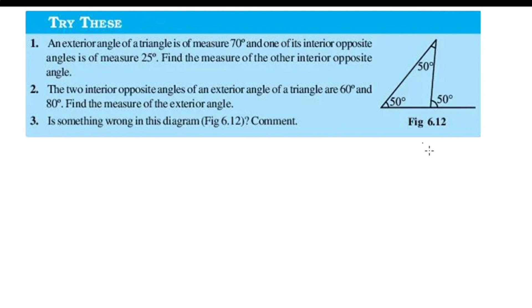First question: the exterior angle of a triangle is of measure 70 degrees, and one of its interior opposite angles is of measure 25 degrees. Find the measure of the other interior opposite angle.